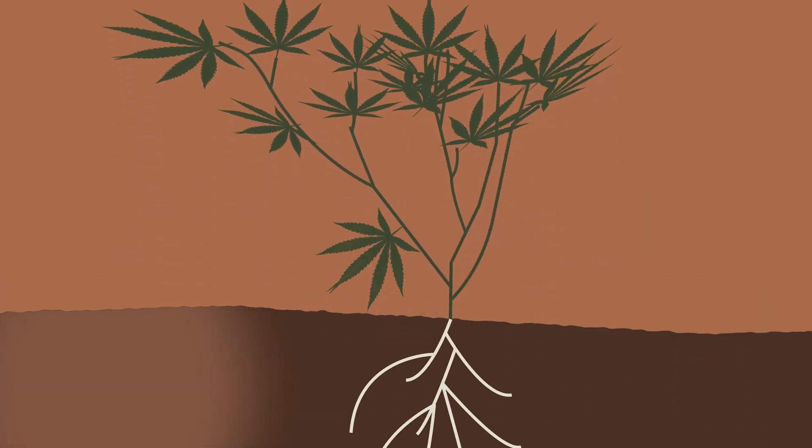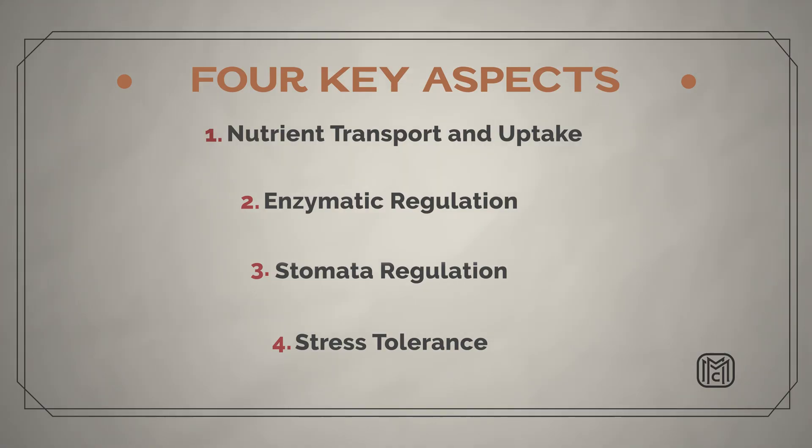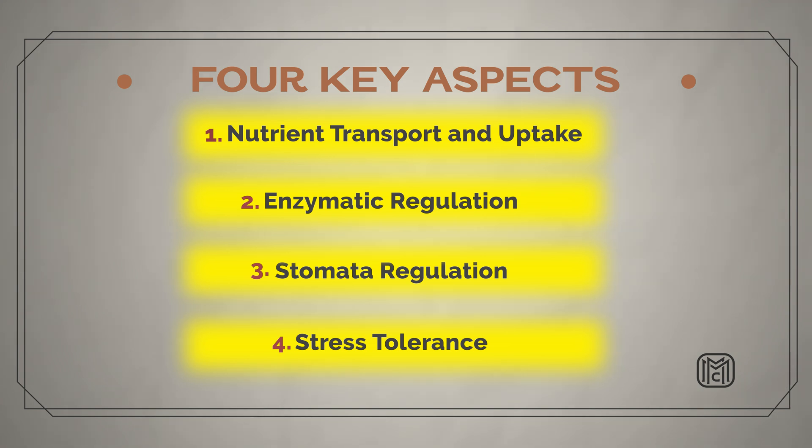The fourth and final category, stress tolerance, is really an overlap of all the other categories. When a plant is under stress — whether drought, pest, heat, cold, or any other input — potassium as the transport and gatekeeper element must regulate all of those systems: osmotic potential, enzymatic activity, pH regulation, ionic transport. During a stressful phase, it is even more critical that an optimal level of potassium ensures all those systems are functioning optimally. All of these aspects share the common unifying theme of potassium's transport and gatekeeper role in the soil web.